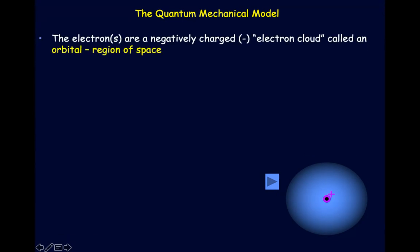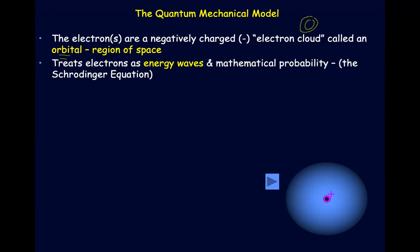The quantum mechanical model basically treats the electron as not just going around the nucleus in these orbits, but rather orbitals. The word orbital simply means a region of space. So instead of electrons being in orbits going around the nucleus, we're going to be in this cloud or haze — this negative region of space, three dimensions around the nucleus — called an orbital. And instead of treating the electron as a particle rotating like a planet around the sun, we're going to treat them as energy waves.